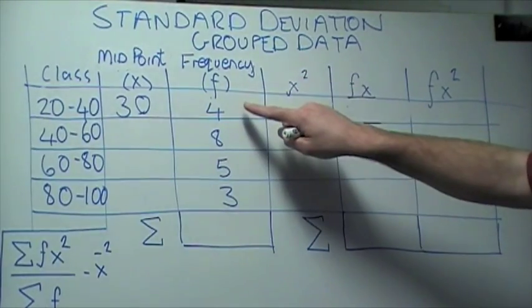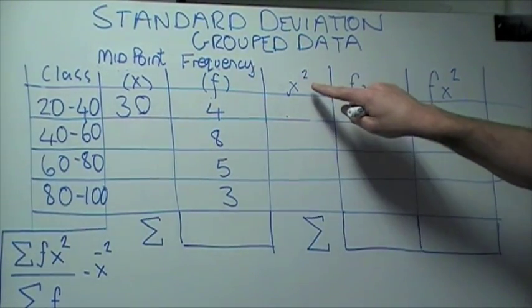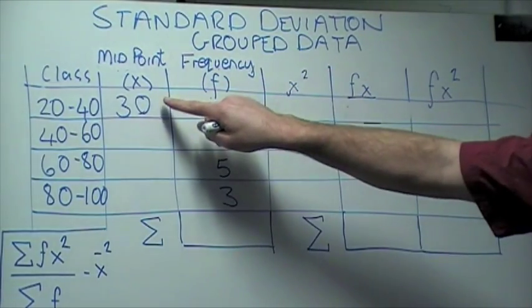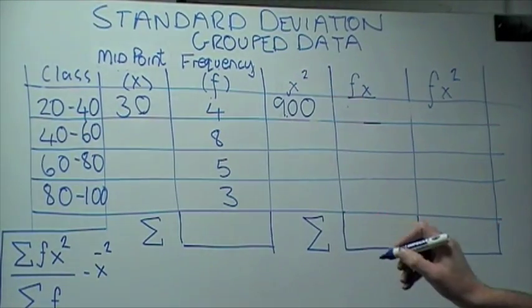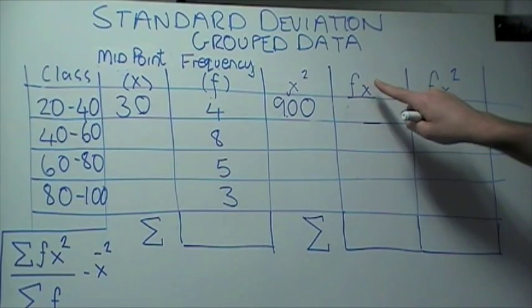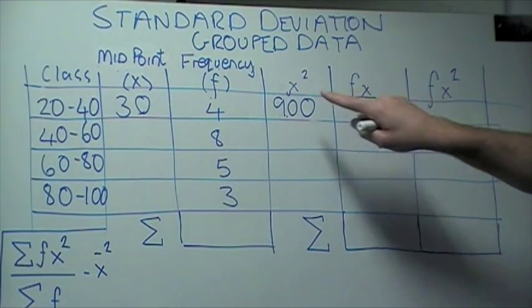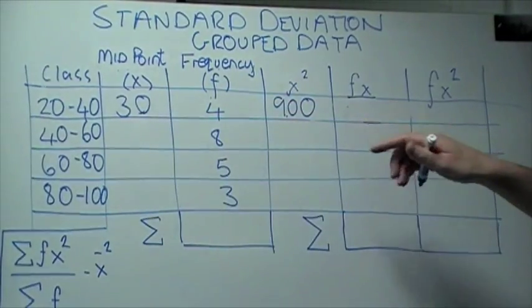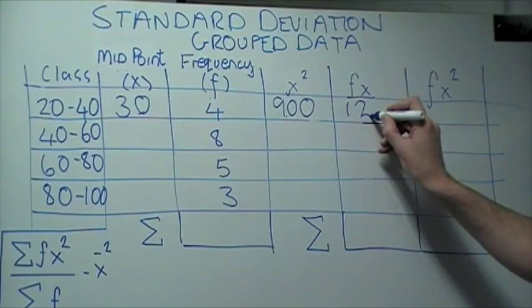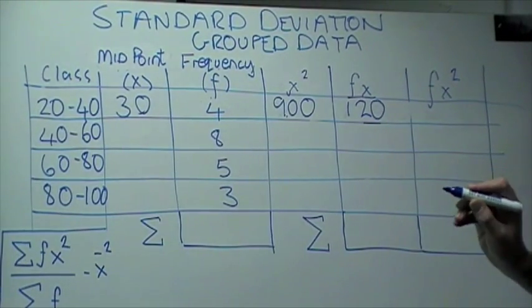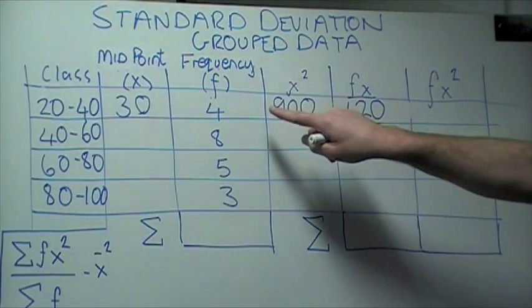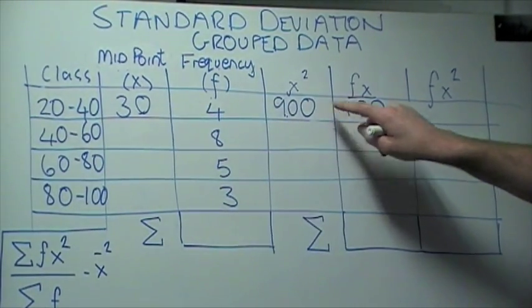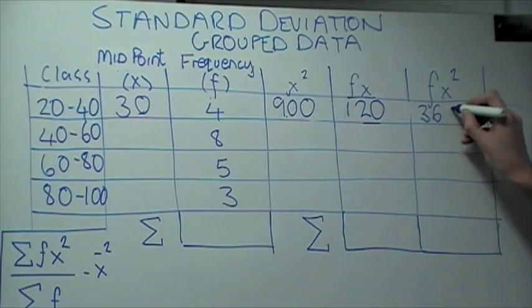We're given the frequency of 4. So x squared, this is the midpoint squared. So this is 900. Now, we need to find the frequency times the midpoint. So this is 30 times 4, that gives us 120. And finally, in this column here, we're looking at the frequency times x squared. So this gives us 4 times 900, which is 3600.